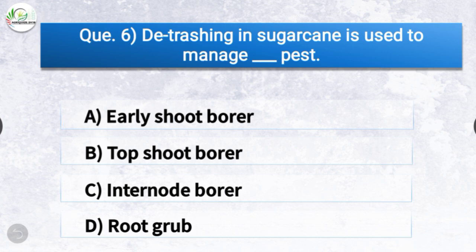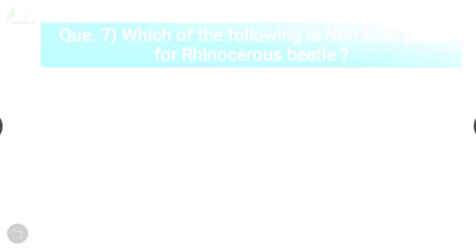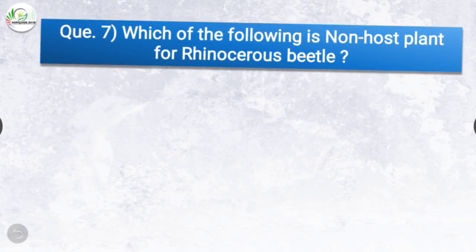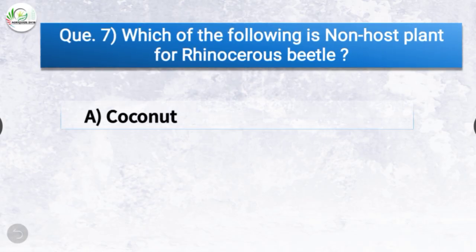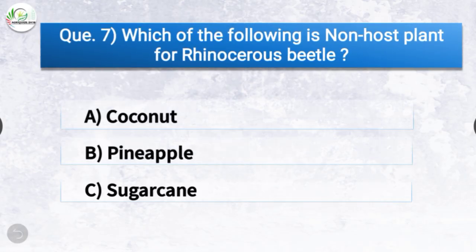Question number six: De-trashing in sugarcane is used to manage which pest? The options are early shoot borer, top shoot borer, internode borer, or root grub. The correct answer is option C, internode borer — de-trashing in sugarcane is used to manage internode borer pest.